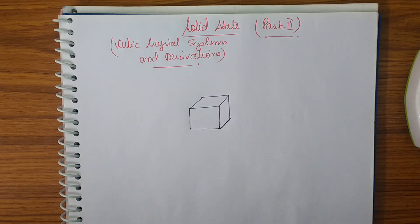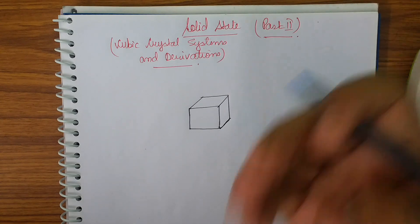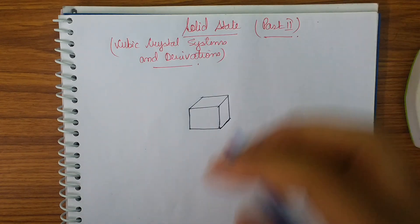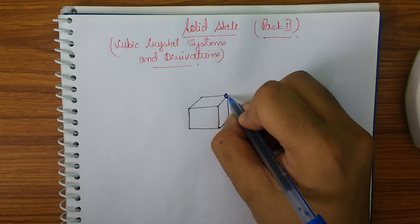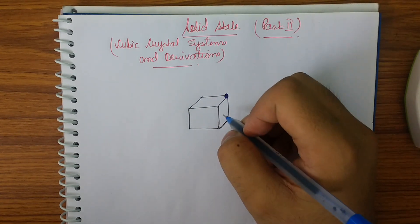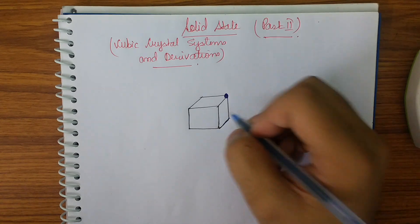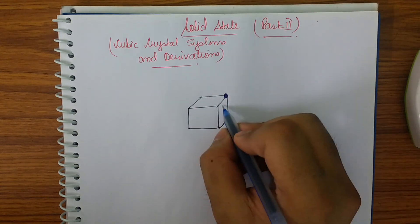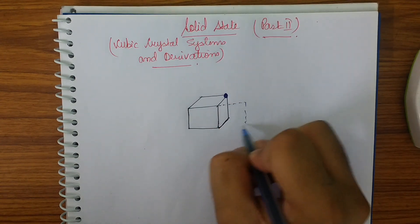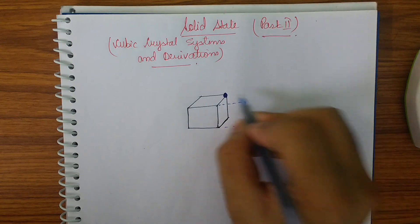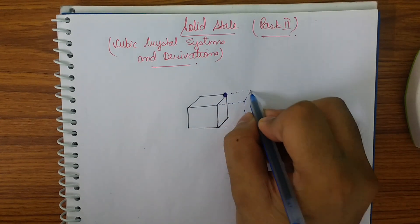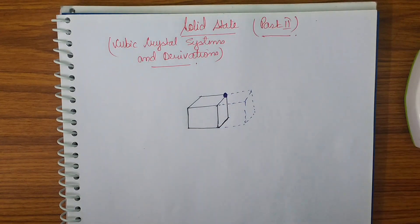Let me take a simple cube. Let this cube be your room so that you can imagine it properly. Now I will be deriving what to do for a corner. So let me take a corner of the cube. This will be the corner of a cube. Now I can take another cube adjacent to this — like a room adjacent to your room.